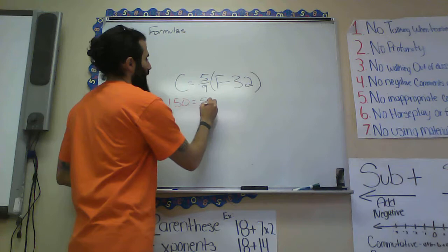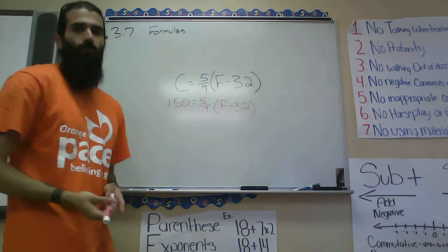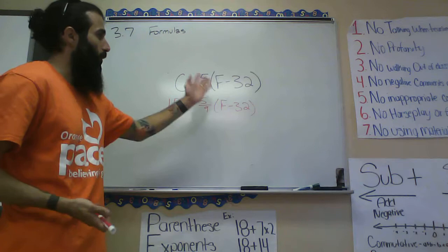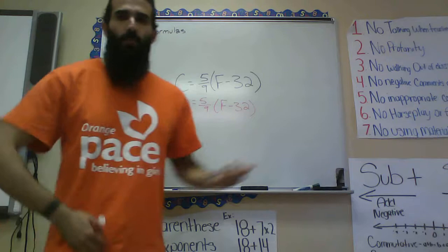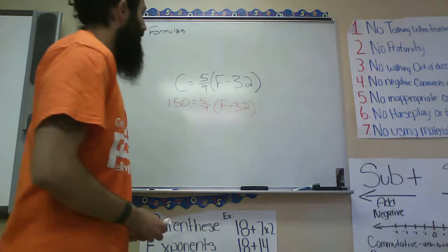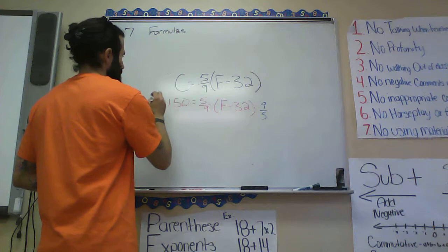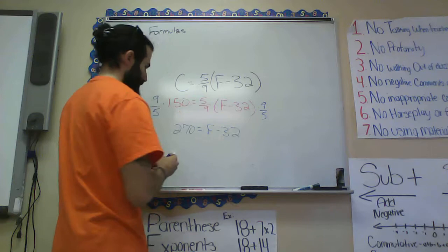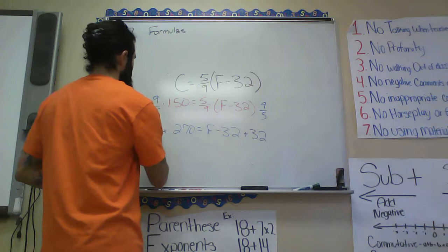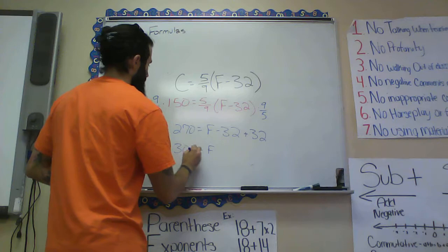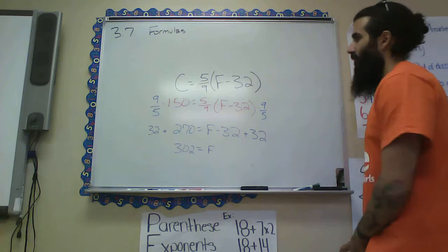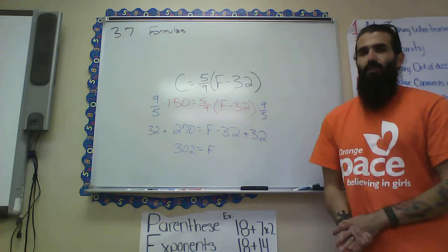So: 150 equals five-ninths times (F minus 32). We multiply both sides by the reciprocal nine-fifths to get 270 equals F minus 32, then add 32 to both sides and get F equals 302. So 302 degrees Fahrenheit equals 150 degrees Celsius. If you want to look at those steps again, pause the video and go back.